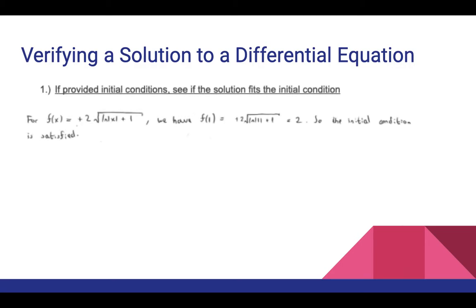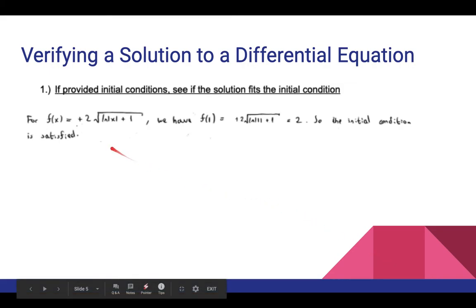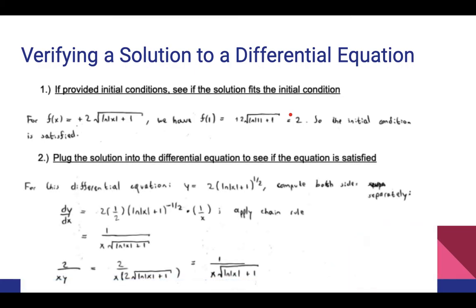To verify a solution to a differential equation: if provided initial conditions, check that the solution satisfies them. For f(x) equals 2 times the square root of (ln(x) plus 1), we compute f(1) equals 2 times the square root of (ln(1) plus 1). Since ln(1) equals 0, this gives 2 times the square root of 1, which equals 2. The initial condition is satisfied. We can also plug the solution back into the differential equation to verify it is correct.